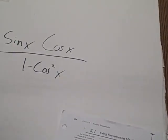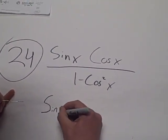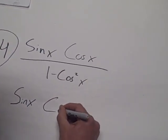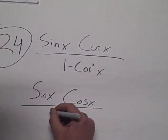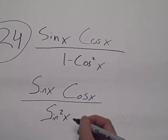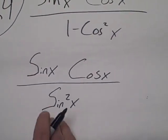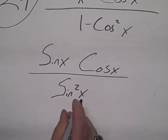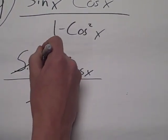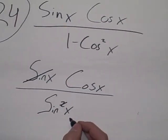So this would change to sine x times cosine x divided by sine squared x. Now we've got sine x on the top and sine squared x on the bottom, so one of those has to cancel out. So we're going to go ahead and cross those out, and we're left with cosine x over sine x.